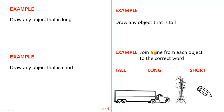Here's another good example: Join a line from each object to the correct word. So you've got tall, long, and short. Students would connect each of these objects with the correct word. Just a few little ideas of some exercises you could give to students.